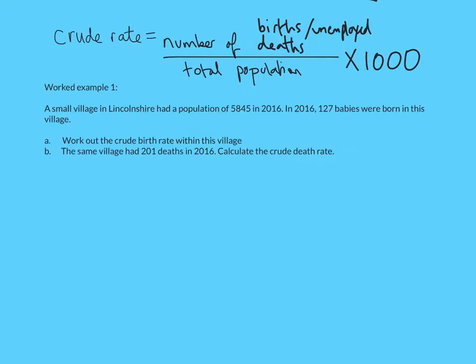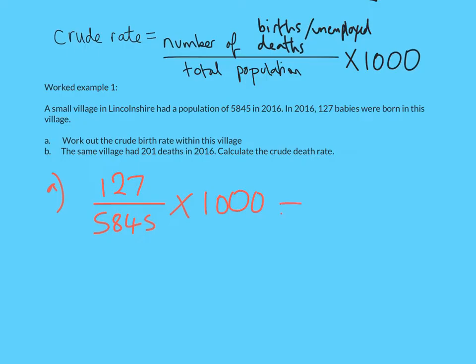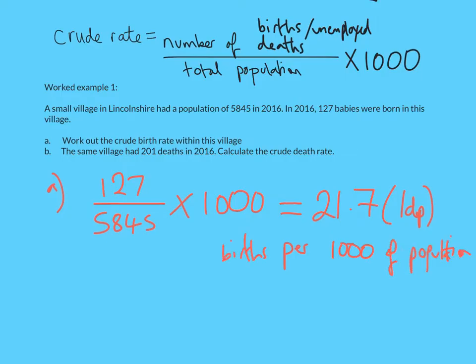Here's a worked example. A small village in Lincolnshire has a population of 5,845 in 2016, and in that year 127 babies are born. To find the crude birth rate, we do 127 divided by 5,845 multiplied by 1,000, which gives 21.7 to one decimal place. So for every 1,000 people of the population there are 21.7 births — that is the crude birth rate.